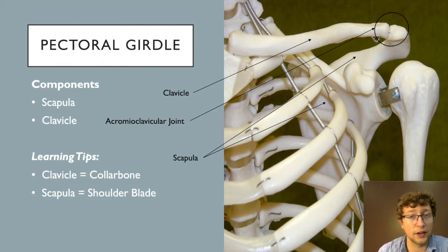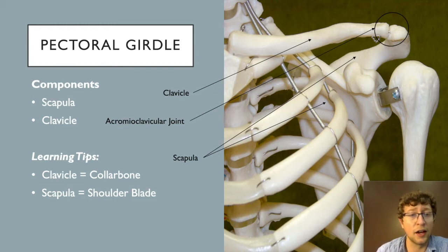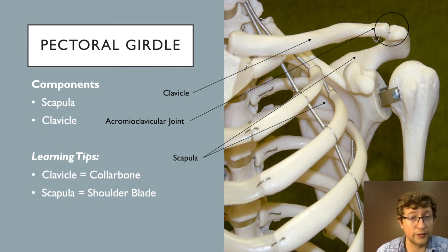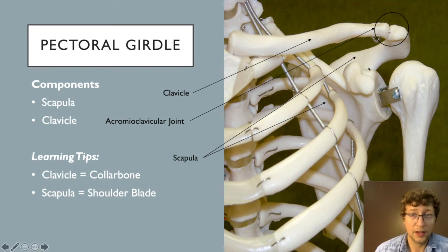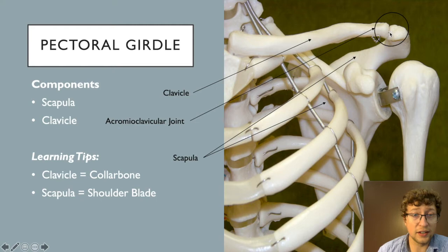Starting with the pectoral girdle — this is what allows us to articulate the upper extremity with the axial skeleton. It's made of two bones: a clavicle and a scapula. The clavicle can be felt at the top of the chest; this is the collarbone. The scapula is the shoulder blade, found behind the ribs. These two form a joint called the acromioclavicular joint, or AC joint.